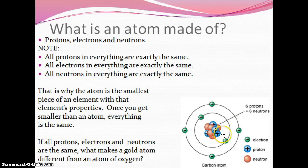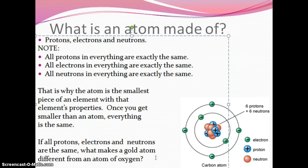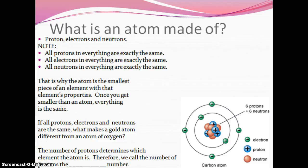What makes gold gold is how many protons it has. Once you get smaller than that atom of gold, it's just protons, electrons, and neutrons — and the protons, electrons, and neutrons in gold are the exact same as those in oxygen. So what makes a gold atom different from an atom of oxygen? The number of protons determines which element the atom is. We call the number of protons the atomic number.